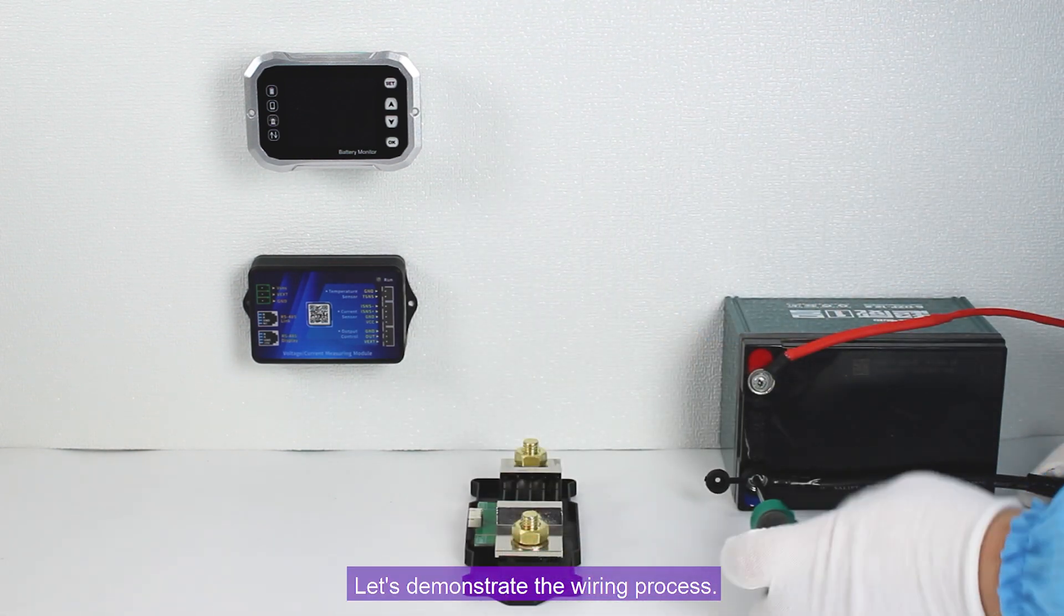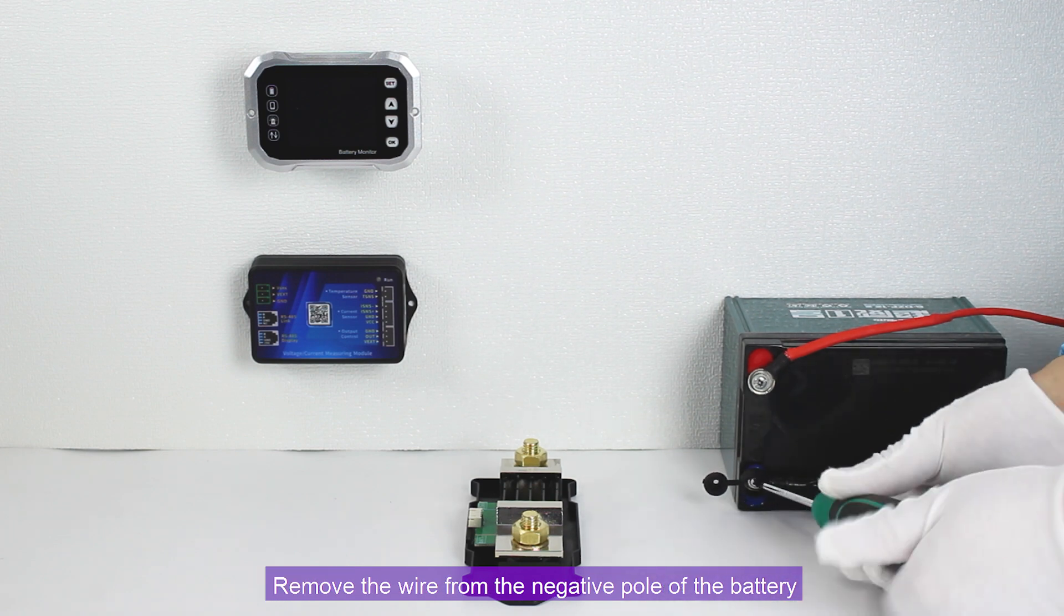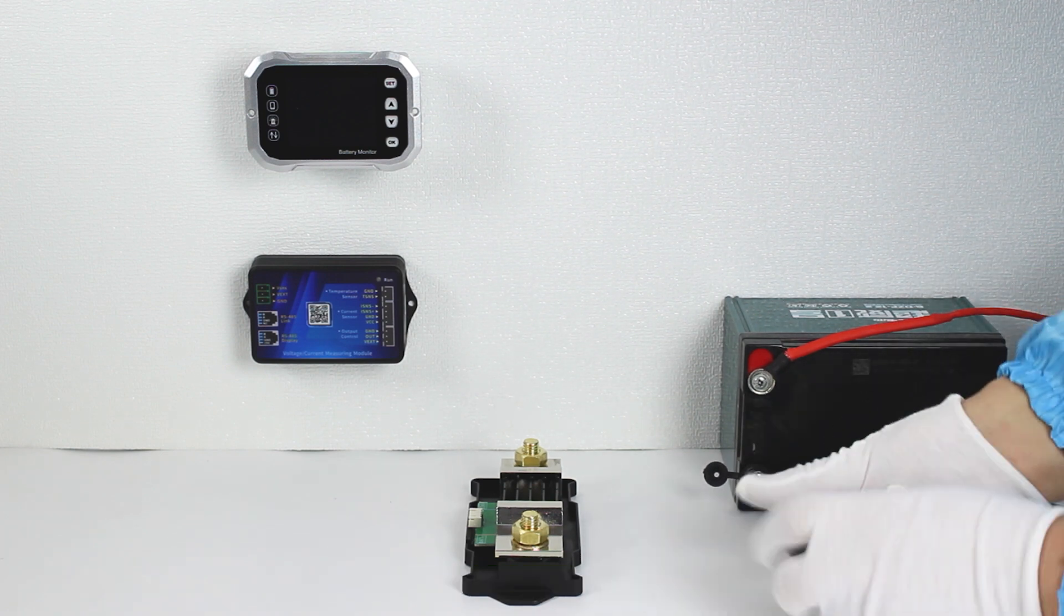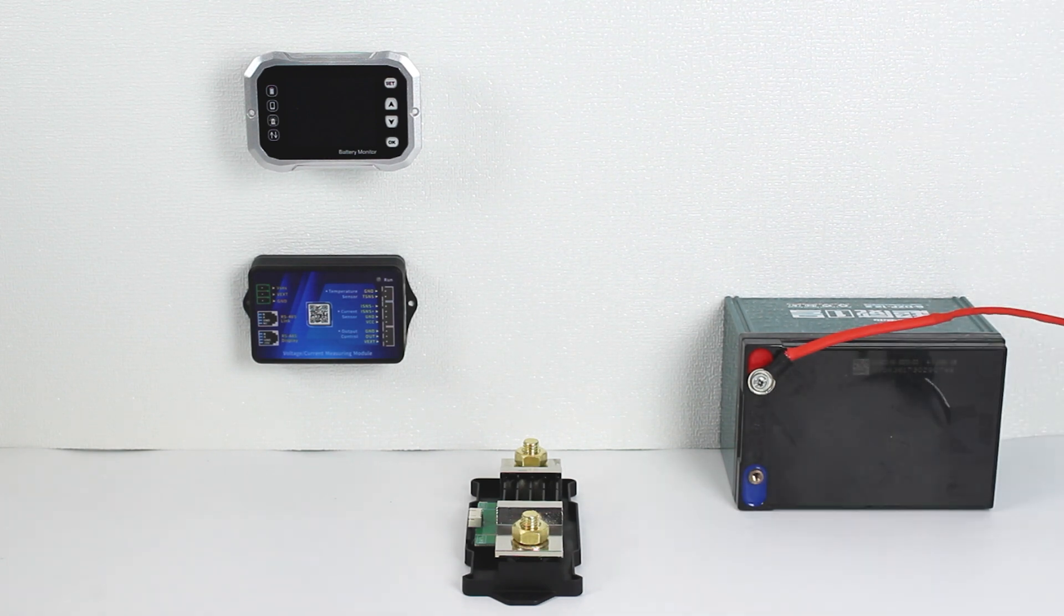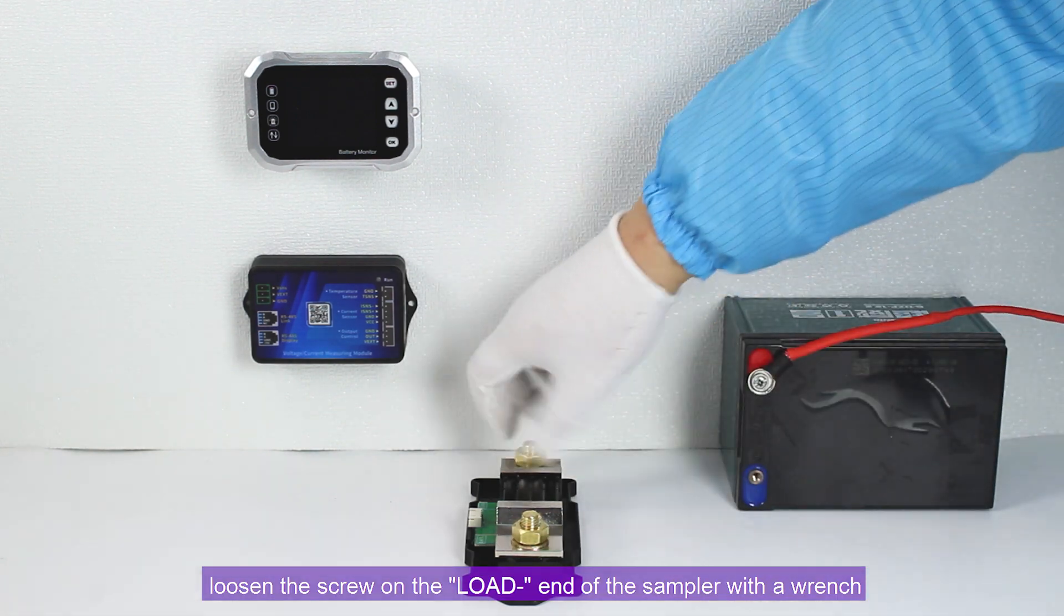Let's demonstrate the wiring process. Remove the wire from the negative pole of the battery. Loosen the screw on the load end of the sampler with a wrench.